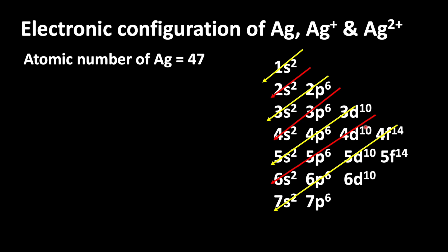Using this let us write the electronic configuration of silver. 1s2, 2s2, 2p6, 3s2, 3p6.